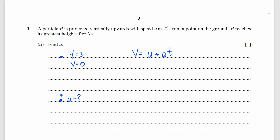Since it's projectile motion, we know that acceleration is 10 metres per second squared pointing downwards, so I'll take it with a minus sign. From here we can find that u equals 30. I'll give this as my final answer.